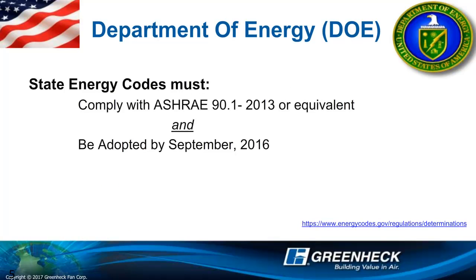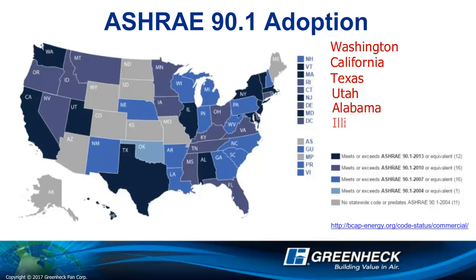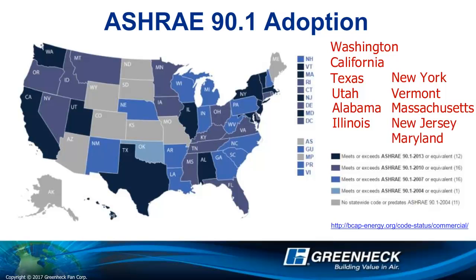The Department of Energy, also known as the DOE, says that all states must comply with ASHRAE 90.1-2013 by September of 2016. Not all states have met this September 2016 requirement. Most are working towards adopting these energy regulations. As of March 2017, the following states in dark blue have adopted ASHRAE 90.1-2013: Washington, California, Texas, Utah, Alabama, Illinois, New York, Vermont, Massachusetts, New Jersey, and Maryland.